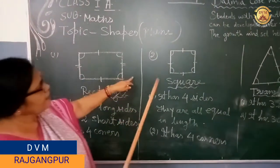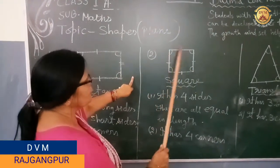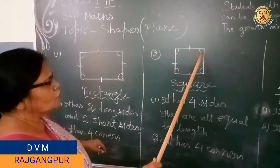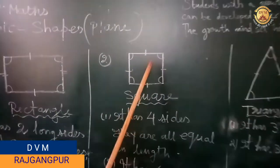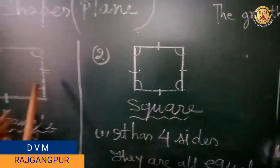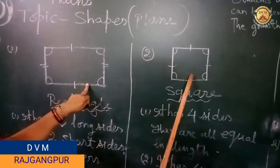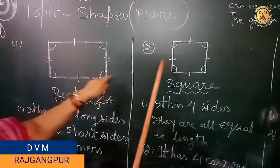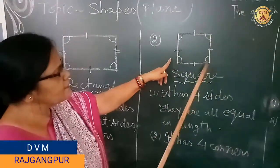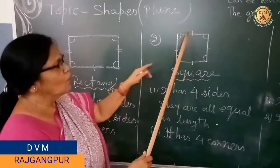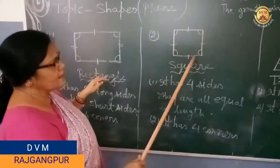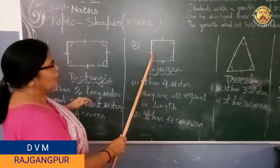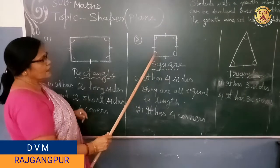Now see children, the next shape is known as square. It has 4 sides. But what is the difference between rectangle and square? Rectangle has 2 long sides and 2 short sides, but in square all the sides are equal — 1, 2, 3, 4. It has 4 equal sides.